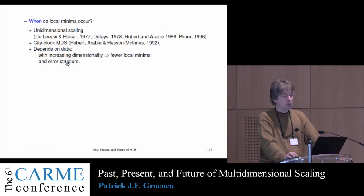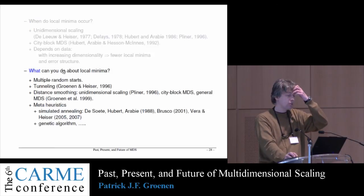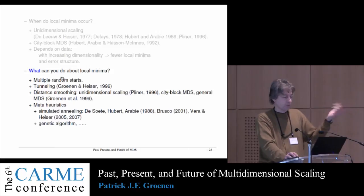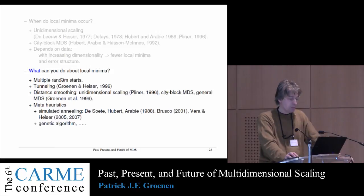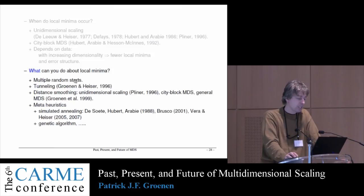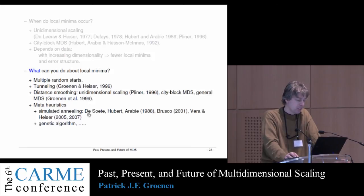Local minima can also depend on the data. I have one example where with a thousand random starts I found 850 different local minima. Several solutions exist: I worked on a tunneling method; multiple random starts is a possibility; the most promising approach is probably the distance-smoothing approach, or possibly meta-heuristics like simulated annealing or genetic algorithms.